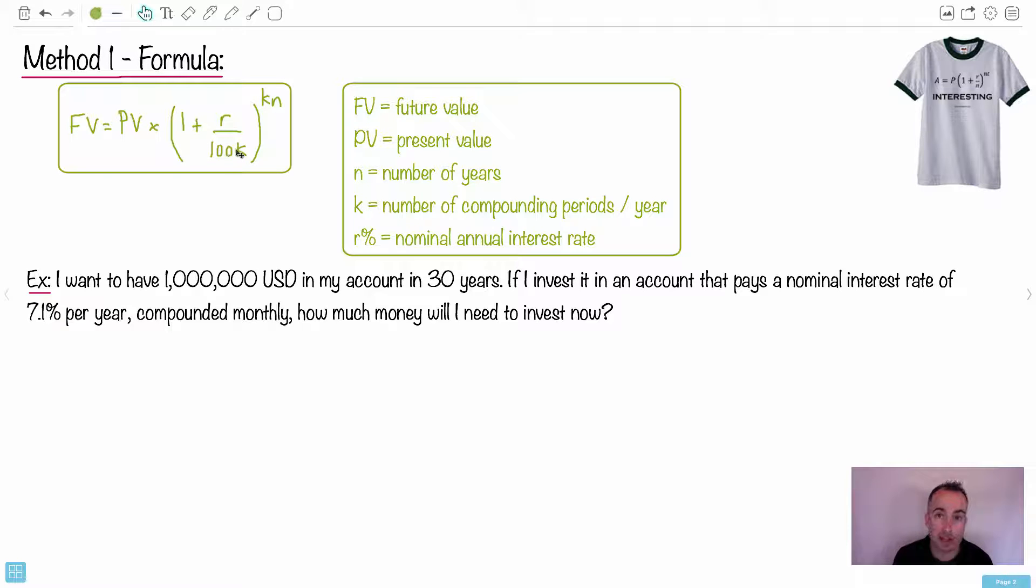So let's do this example here with this equation. If I want to have a million US dollars in my account in 30 years, I invest it in an account that pays a nominal annual interest rate of 7.1 percent per year. Turns out that's actually really high. It's compounded monthly. How much do I need to invest now? This is going to be, we're just going to put in this equation here. So key thing is to figure out, first of all, you tell your examiner when you have a question like this on an exam, you make sure to write down that equation to tell them I know what I'm doing. Or at least I know what I'm trying to do, right? So you just put in the equation.